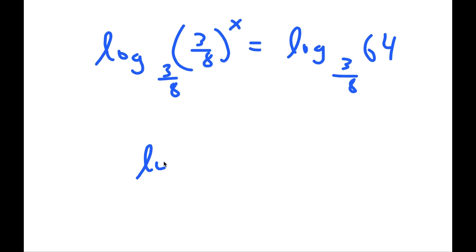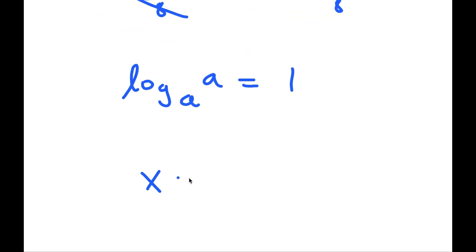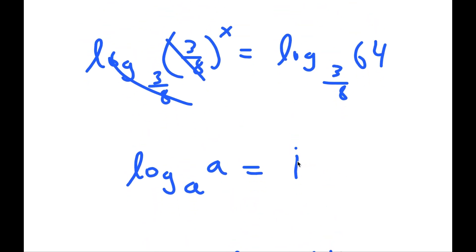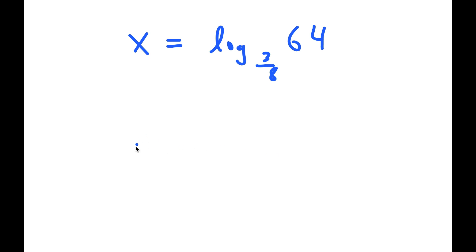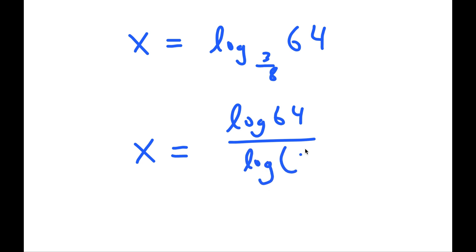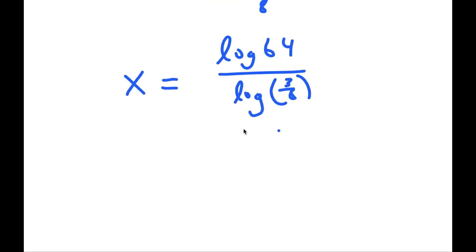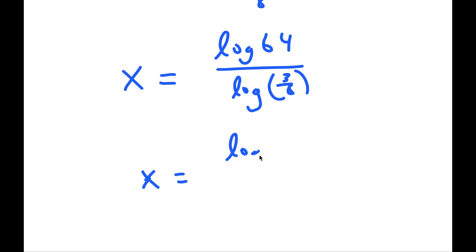If I have something in the form log base a of a, this is simply equal to 1, meaning these two cancel out, and I'm left with x is equal to log base 3 over 8 of 64. From here, this is equal to log 64 over log of 3 over 8, which is equal to log 64 over log 3 minus log 8.